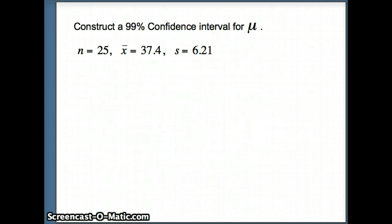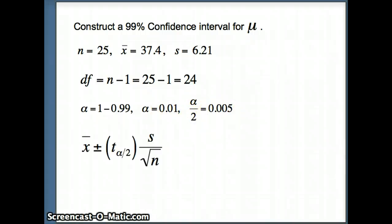So here's what we want to do. n is 25, x bar is 37.4, and s is 6.21. Degrees of freedom are n minus 1, n is 25. 25 minus 1 is 24. So we have a t with 24 degrees of freedom here. Our alpha, 99% confidence interval. To get alpha, we're going to take 1 minus 0.99 or 0.01. Then I need alpha divided by 2. Alpha divided by 2 will be 0.005. So we're going to go ahead and compute the confidence interval using our formula. And to do that, of course, you've got to find t alpha by 2, or t with 0.005 in the tail with 24 degrees of freedom.